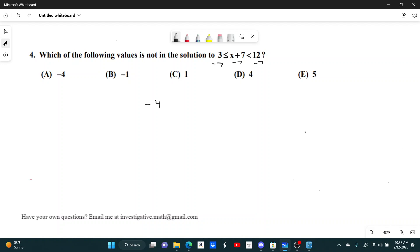So 3 minus 7, that's negative 4, is less than or equal to x, which would be less than 5.